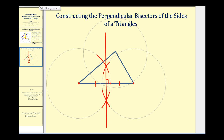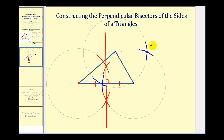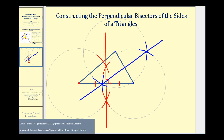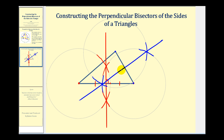Again, leaving the radius the same, let's bisect this shorter side. We'll put the point of the compass here and swing an arc to the left and right of this side. Then we'll put the point of the compass at the other vertex and do the same — swing an arc to the right and to the left. The intersection points of these arcs will be on our perpendicular bisector. We again have a right angle here and two congruent segments.